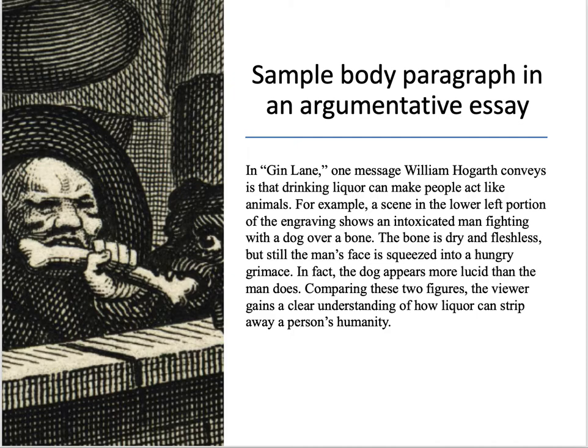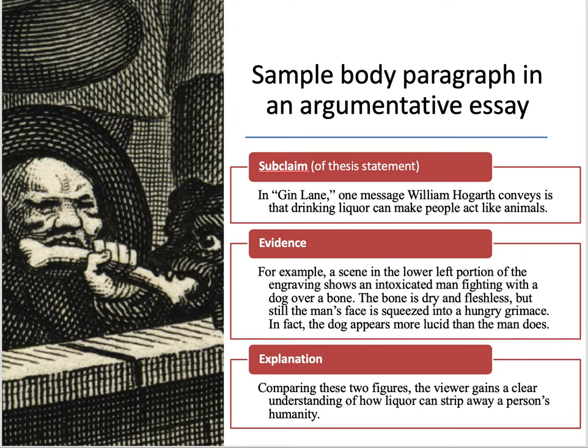Now let's break down the CSEE structure of that body paragraph. We've got the subclaim: "In Gin Lane, one message William Hogarth conveys is that drinking liquor can make people act like animals." Then we've got a few pieces of evidence that support the subclaim. And then at the end, we have a nice wrap-up that explains very clearly how the evidence matters to the subclaim. The subclaim is opinionated — it's arguable. The paragraph's middle three sentences, the evidence, are details that you can't really argue against; they're just describing the images in the art. This is a good paragraph for an argumentative essay. It makes a clear, well-organized argument.